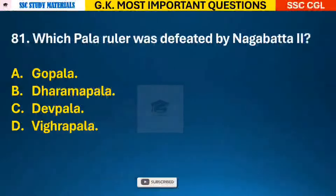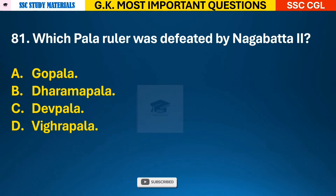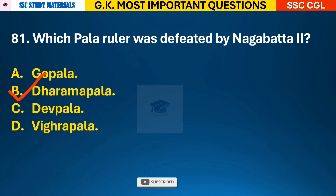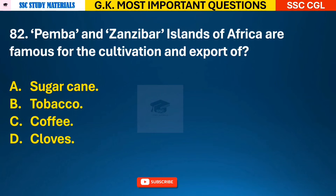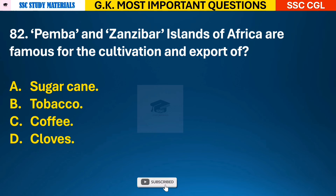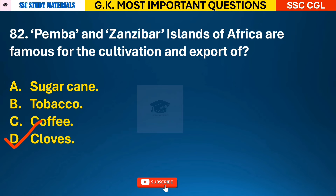Question 81: Which Pala ruler was defeated by Nagabhatta II? Answer B - it was Dharmapala. Question 82: Pemba and Zanzibar Islands of Africa are famous for the cultivation and export of? Answer D - it is famous for the cultivation of cloves.